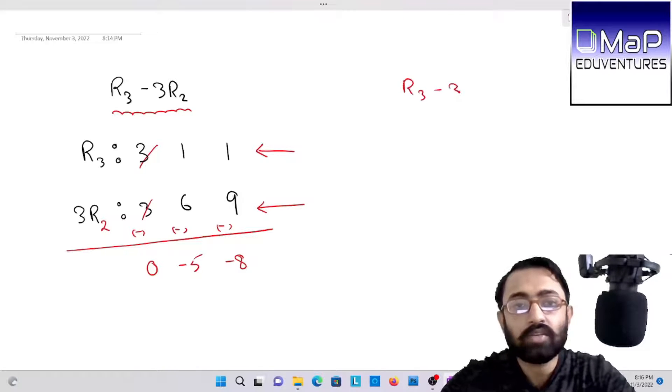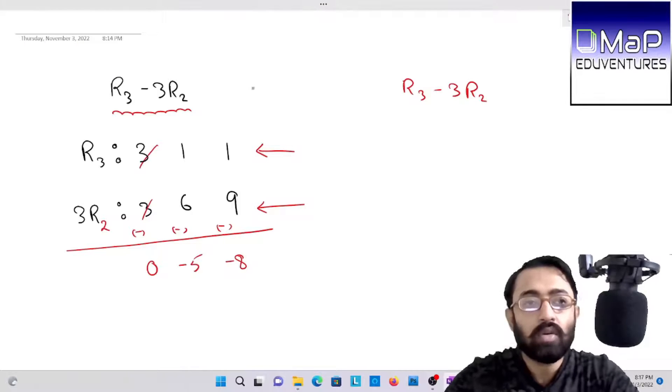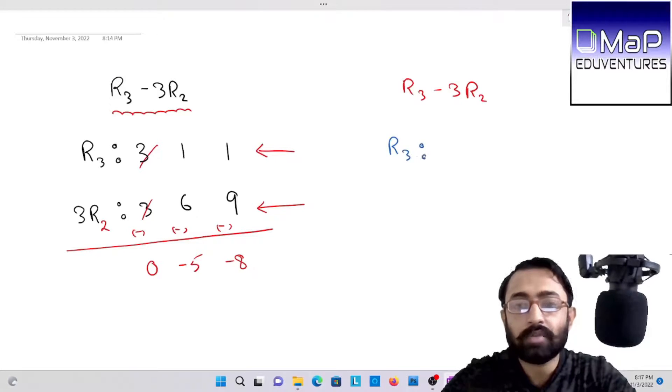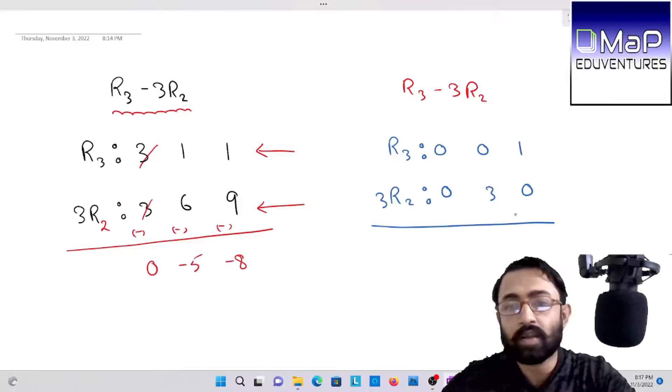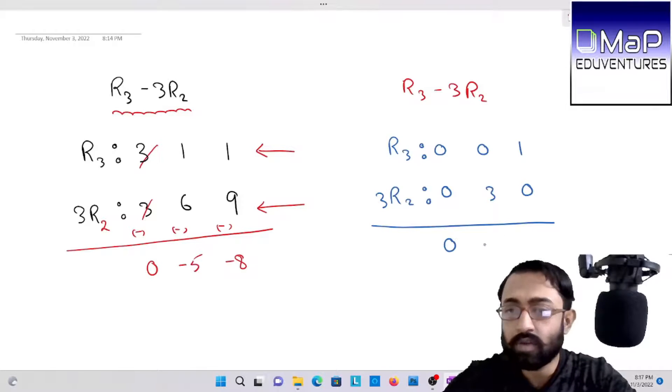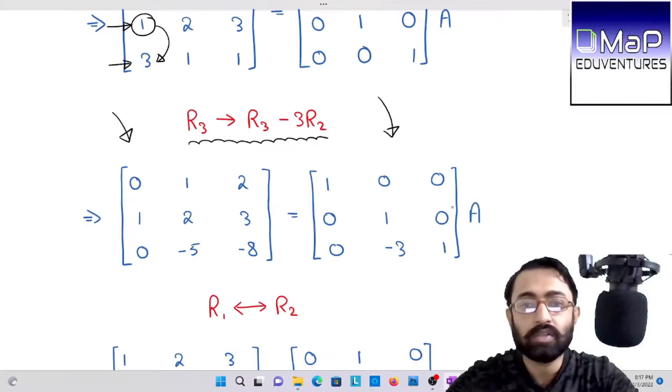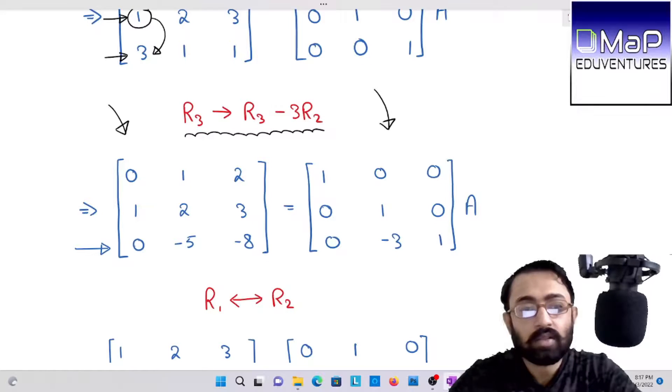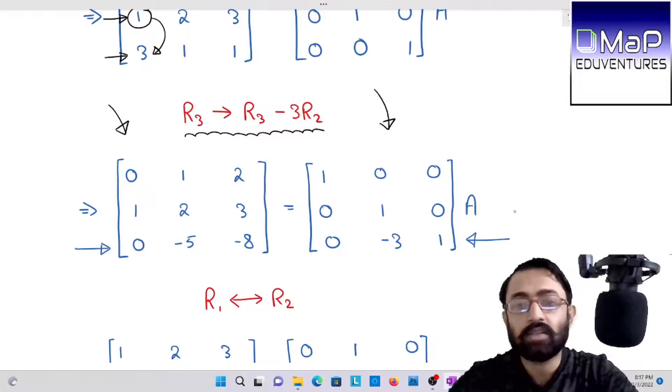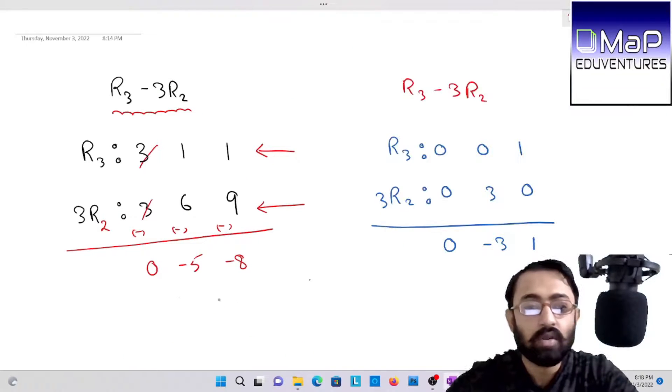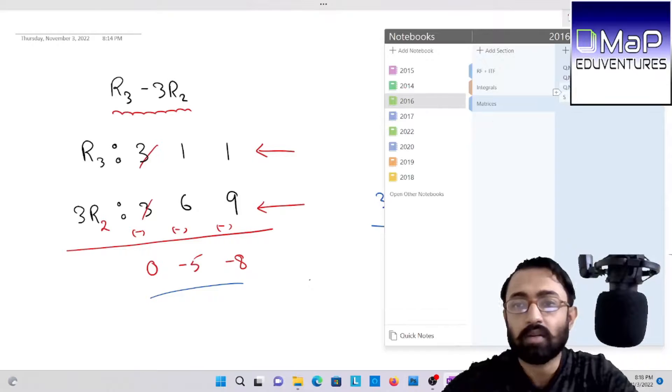After subtract, three will get cancelled out and you will get minus five and minus eight. So the left hand side matrix is done. On right hand side matrix also, same R3 minus three times of R2. R3 is zero, zero, one and R2 is zero, three, zero. If you subtract, zero minus zero is zero, you will get minus three and one. Simple.